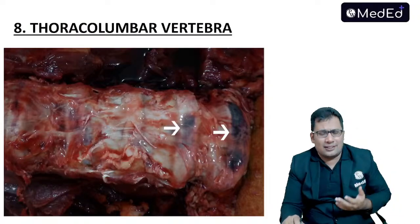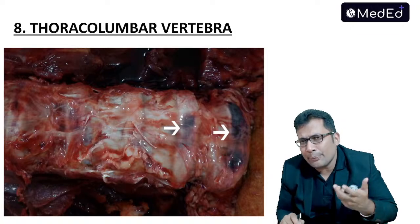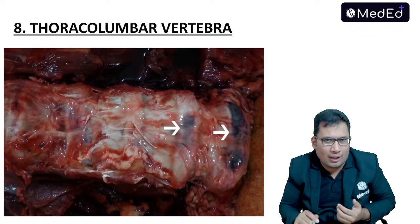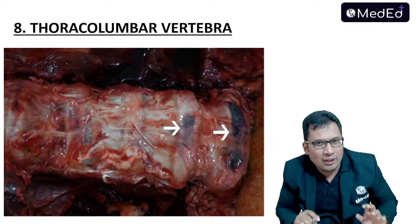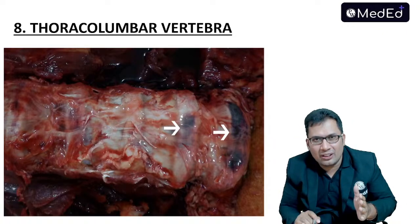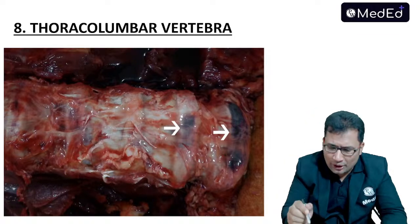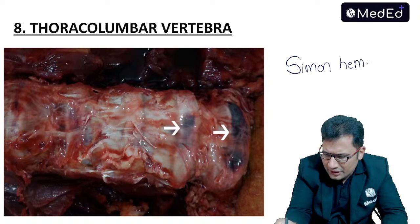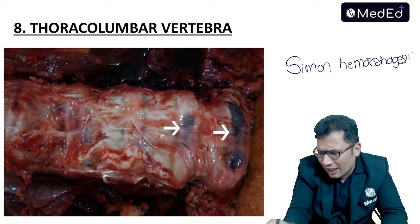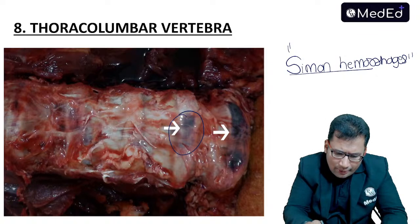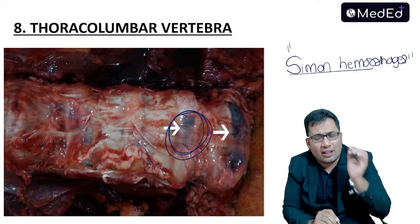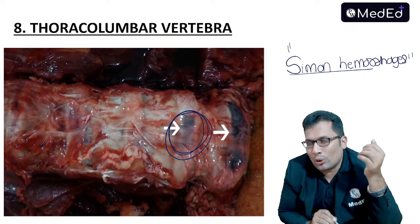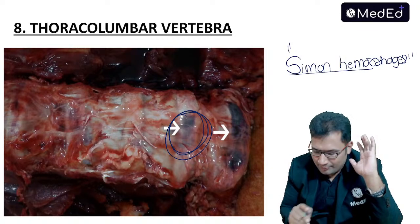In some cases of hanging, when you open the thoracic and lumbar vertebrae you may find hemorrhages. These are known as Siemens hemorrhages — hemorrhages at the thoracolumbar vertebrae. They are non-specific and can be seen in road traffic accidents or bleeding and coagulation disorders.